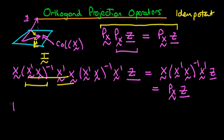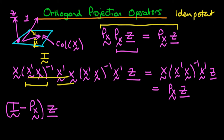I also want to talk about the projection operator defined by I minus PX, and what properties it will have. If we have a vector Z which lies orthogonal to the column space of X, then expanding the bracket gives Z minus PX times Z. Since Z is orthogonal to the column space of X, PX times Z is just zero, so this second term disappears and we're just left with Z.